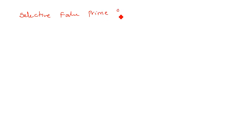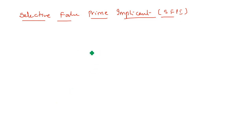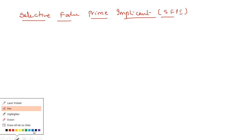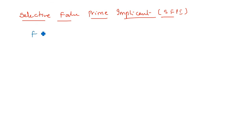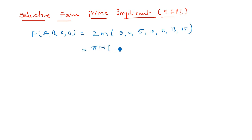Coming to the last one: selective false prime implicant. Take f(A,B,C,D) = Σm(0,4,5,10,11,13,15). For the same, the set of max terms is: 1, 2, 3, 6, 7, 8, 9, 12, 14. Take the K-map and map all these max terms.